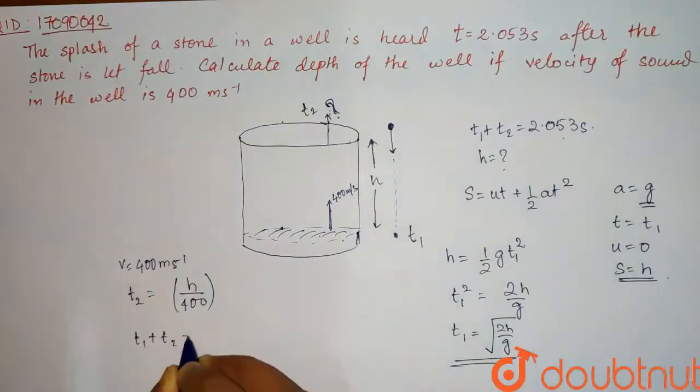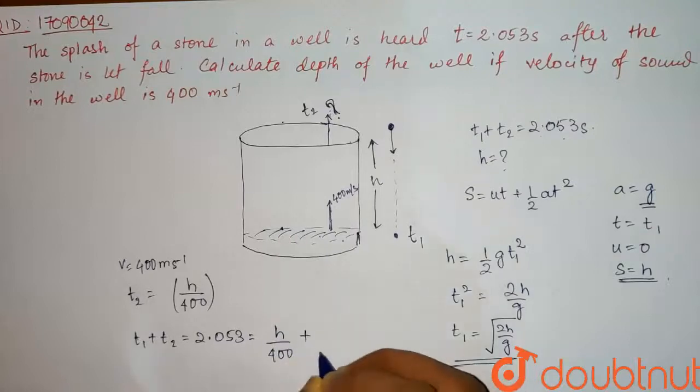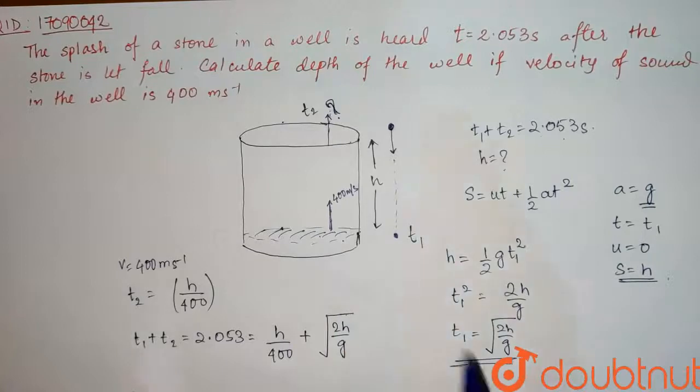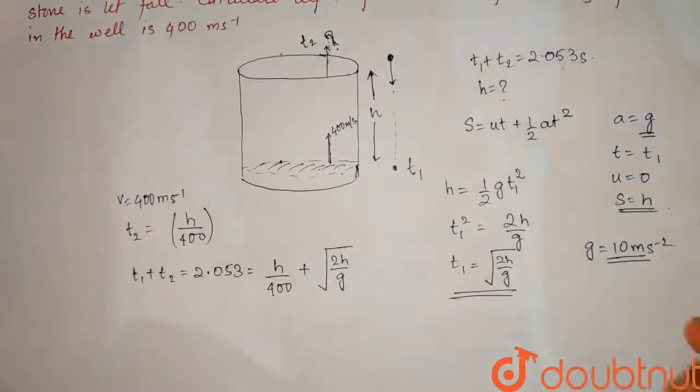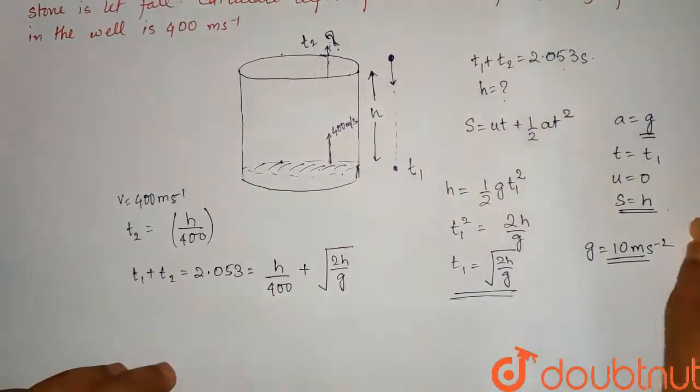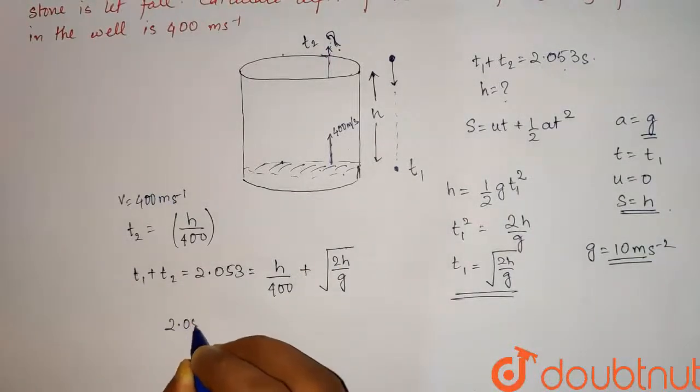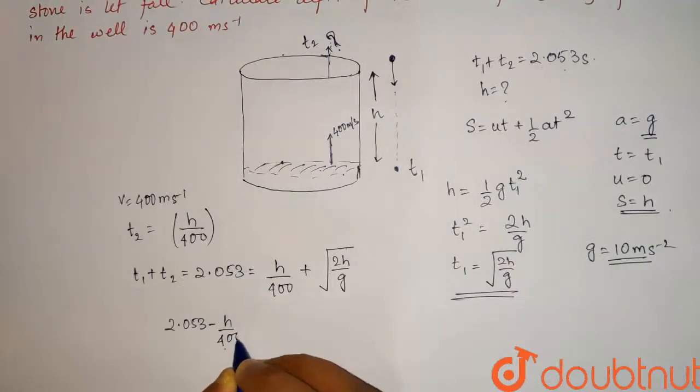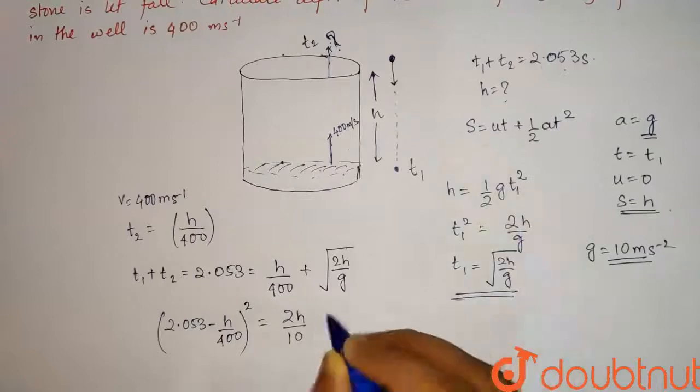t1 plus t2 has given us 2.053 seconds which will be H by 400 plus root 2H by g. For convenience we are taking here g is equal to 10 meter per second square. So you can solve this equation as a normal quadratic equation, but calculations will be very lengthy and you will take a lot of time. So here we will use an approximation which I am going to show you now. So what are we going to do? We will take H by 400 to the other side.